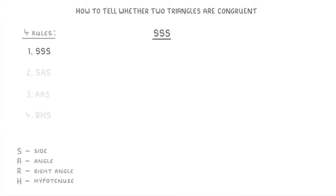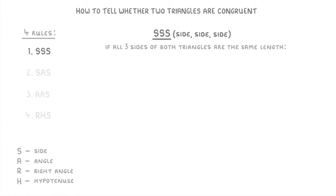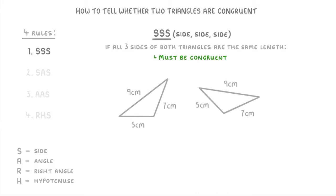So if we start with SSS — side, side, side — all it means is that if all three sides of both triangles are the same length, then those triangles must be congruent to each other. So if we take these two triangles here, we can tell that these must be congruent, because they both have a 5cm side, a 7cm side, and a 9cm side. It doesn't matter how they're arranged or what orientation the triangles are in, as long as all three sides are the same length, they'll be congruent.